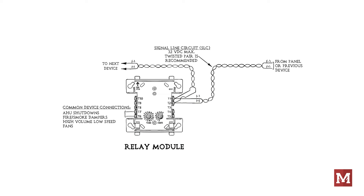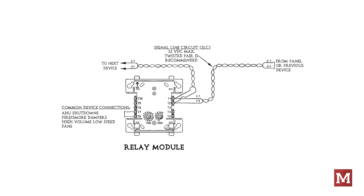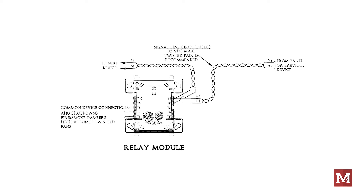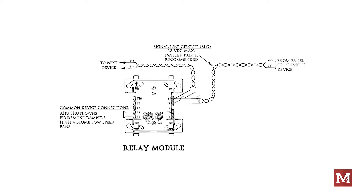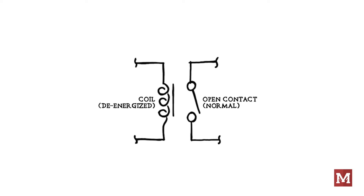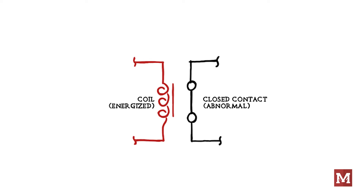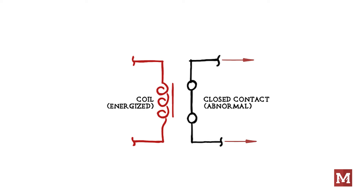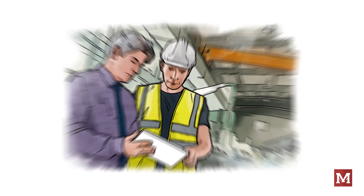A dry contact relay is a type of relay that uses a set of contacts to control an external circuit. It's called dry because the contacts don't carry any current on their own — they simply provide a connection between two points in the circuit. When an electrical signal is sent to the relay coil, it generates a magnetic field that causes the contacts to move from their normally open position to a closed position, allowing current to flow through the circuit and activating whatever device is connected. One of the advantages of using a dry contact relay is that it provides electrical isolation between the control circuit and the external circuit, which helps prevent electrical interference.